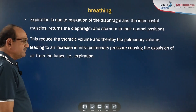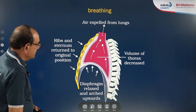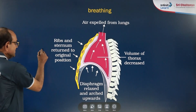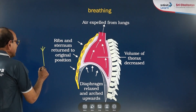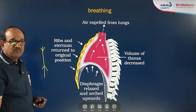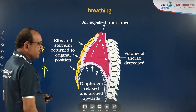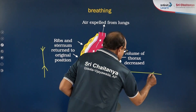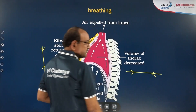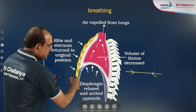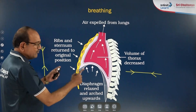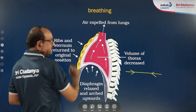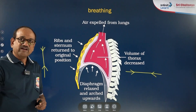Next, expiration. During expiration, the phrenic muscles of the diaphragm relax. As a result, the thoracic cavity volume decreases in the anterior-posterior direction, that is the vertical axis. At the same time, external intercostal muscles also relax, so the thoracic volume decreases in the dorsal-ventral axis. When volume decreases, pressure increases, so the air present in the lungs goes out. This phase is called expiration, which is a passive process.